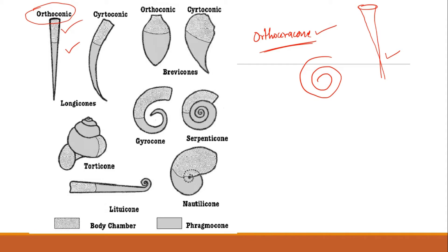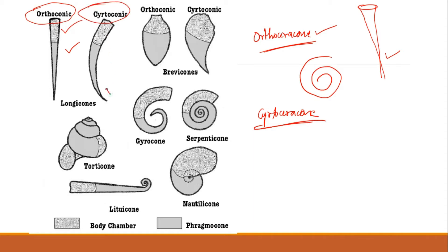The next one is your sertoceracone. In this, the shell is slightly curved. First you had your shell very straight — that was your orthoceracone — and after that your shell bent or curved slightly, so this is your sertoceracone. You can see there is slight coiling or slight curving — this is your sertoconic shell.